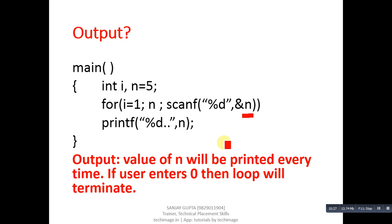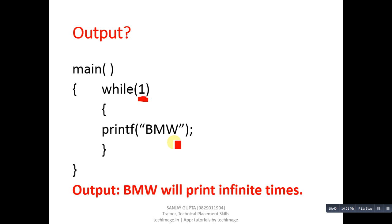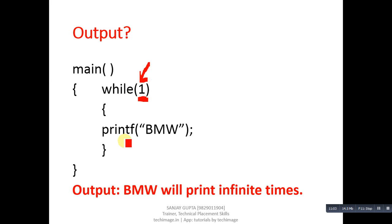The next code segment contains a while loop. Inside while, only 1 is written, and inside the curly braces, a printf statement prints BMW. The output is BMW printed infinite times — this is another form of infinite loop. While contains 1, which is a constant value that remains the same always. No increment/decrement operations are defined inside the while loop. While 1 means true, so BMW will print again, while checks its condition, it is again 1 — still true. Since 1 remains constant, this while becomes an infinite loop and BMW is printed infinite times.